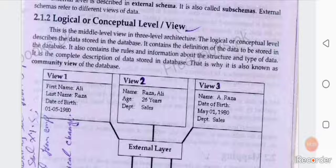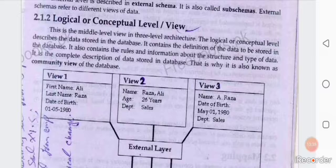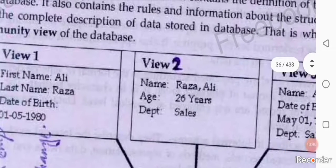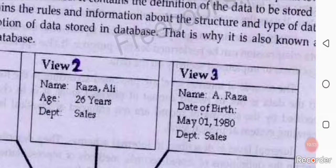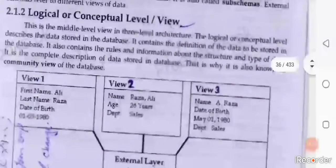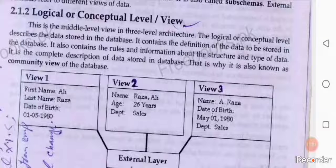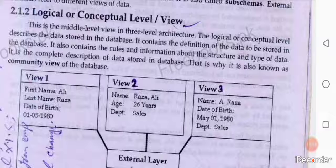In the conceptual level, we create the structure — design the format according to which we save our data. For example, in view 1, a person's first name, last name, and date of birth may be stored in one format. In view 2, name, age, and department are stored — same person's data but a different perspective. In view 3, name, date of birth, and department. The data is the same but views differ. In logical and conceptual view we define the data's rules — how our data is structured and maintained. This is also called the middle-level view.